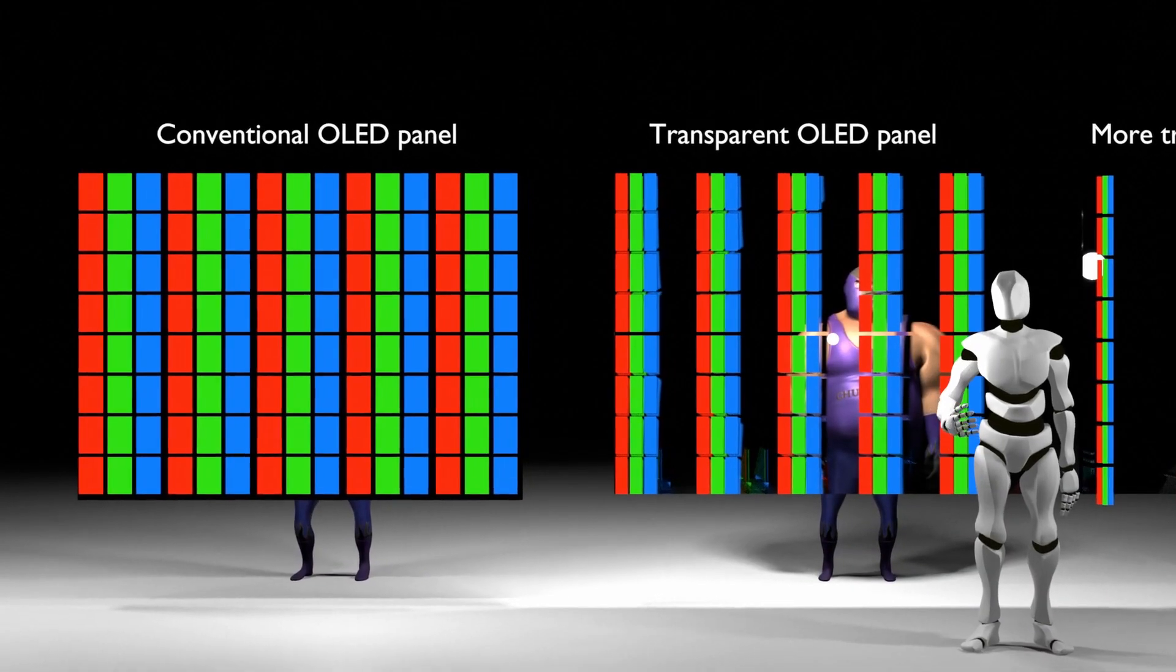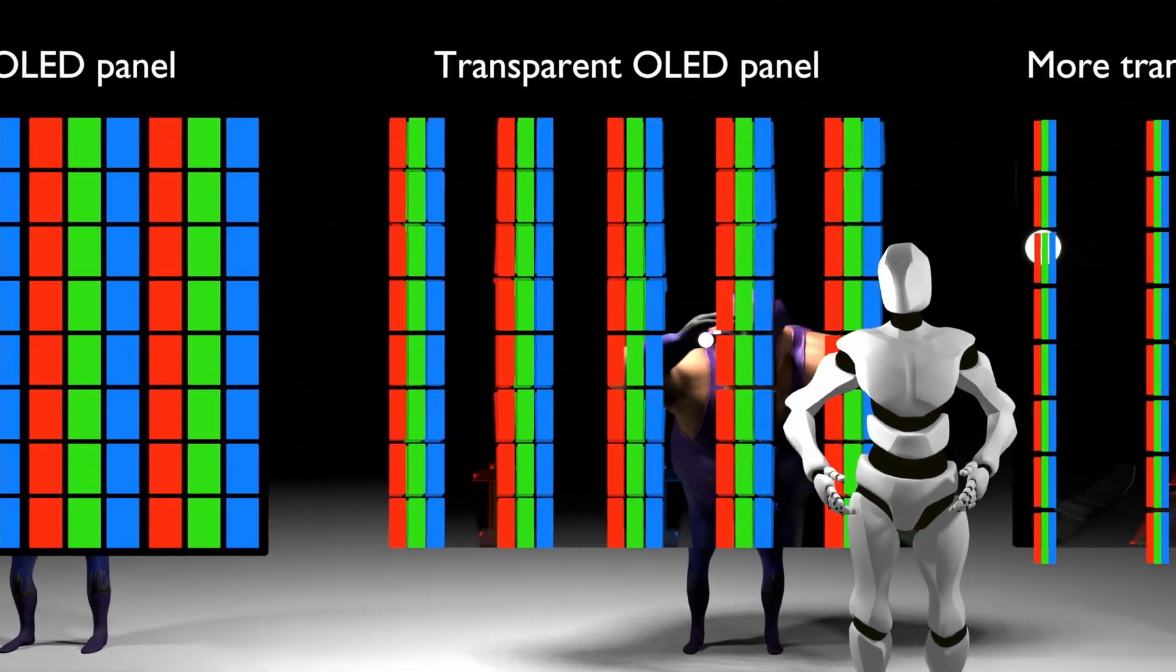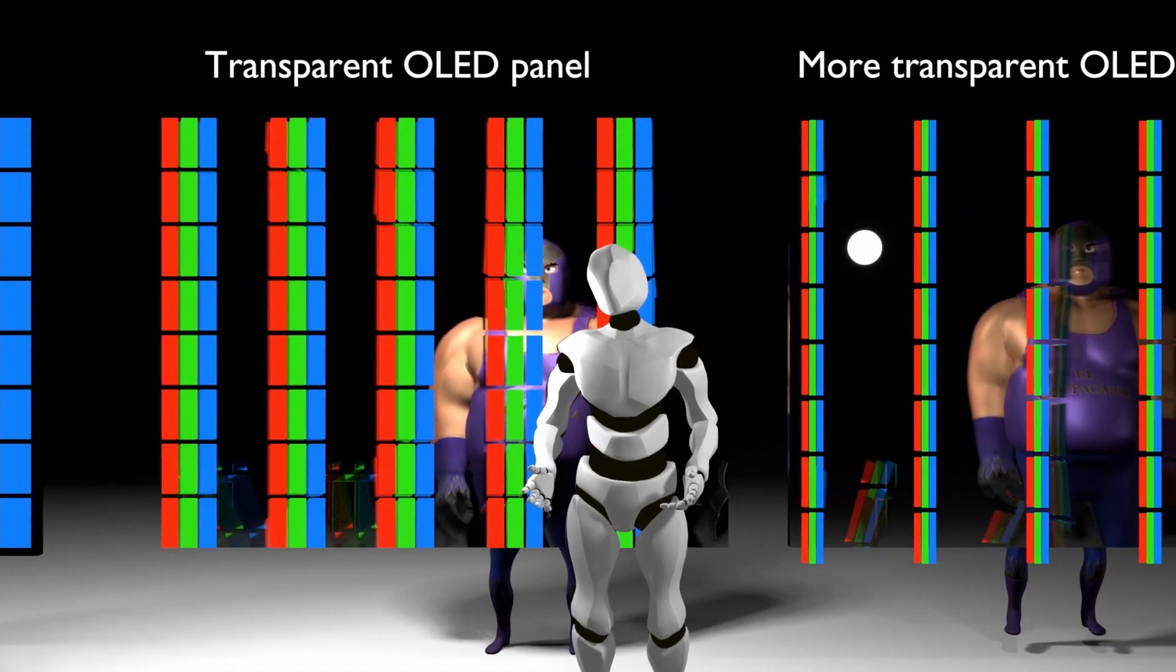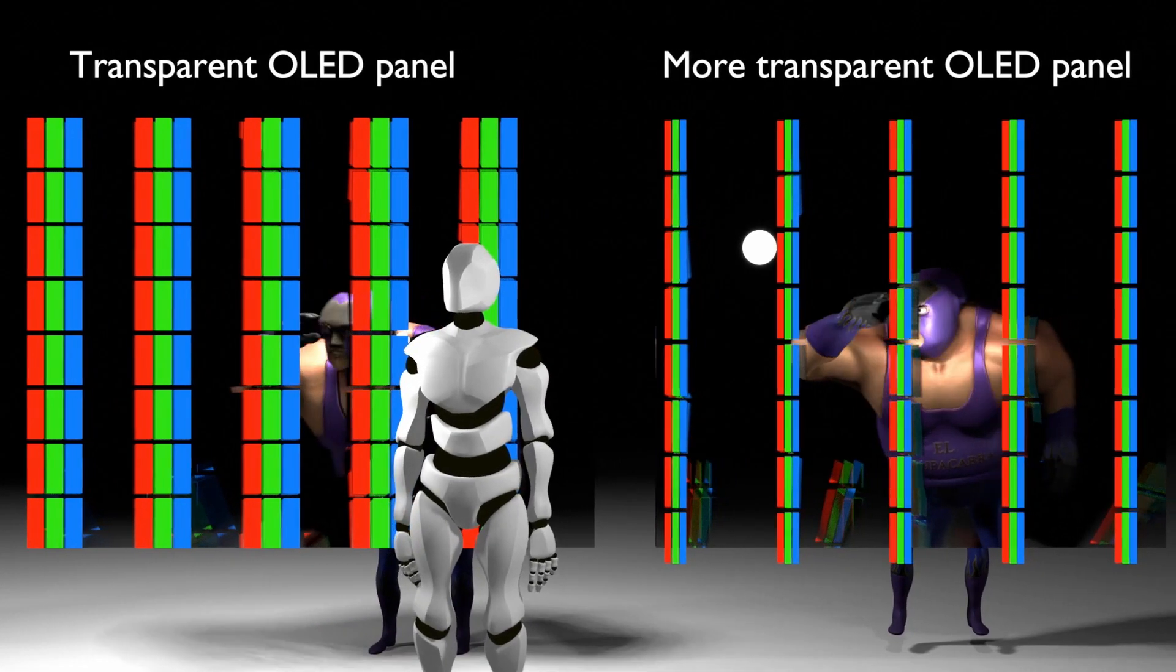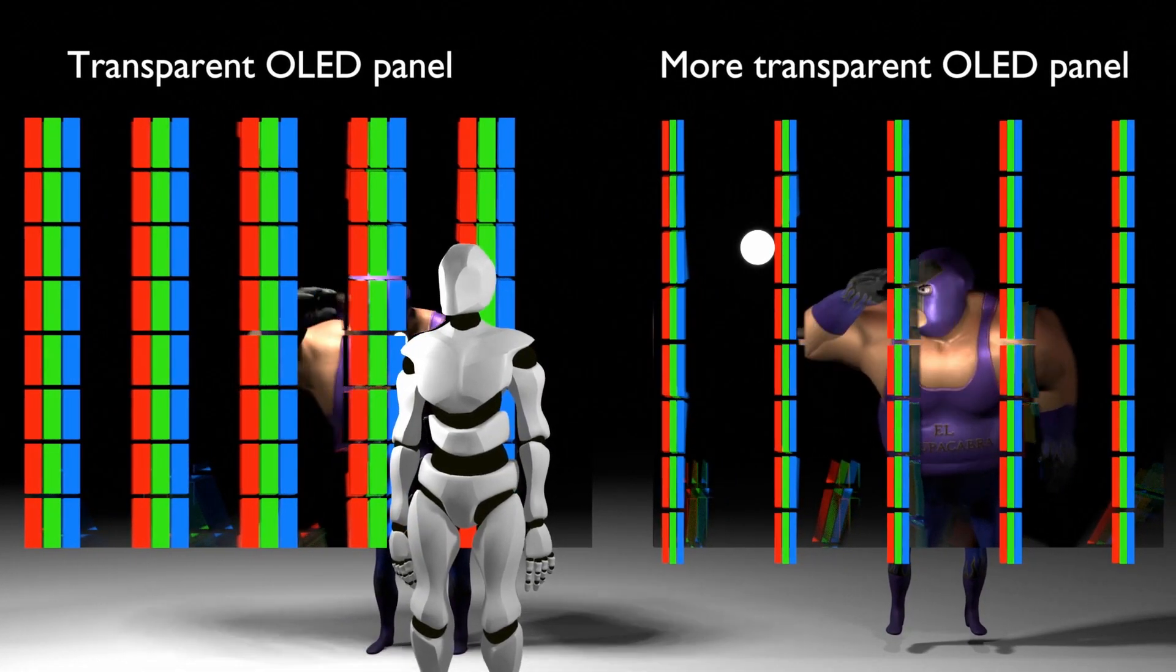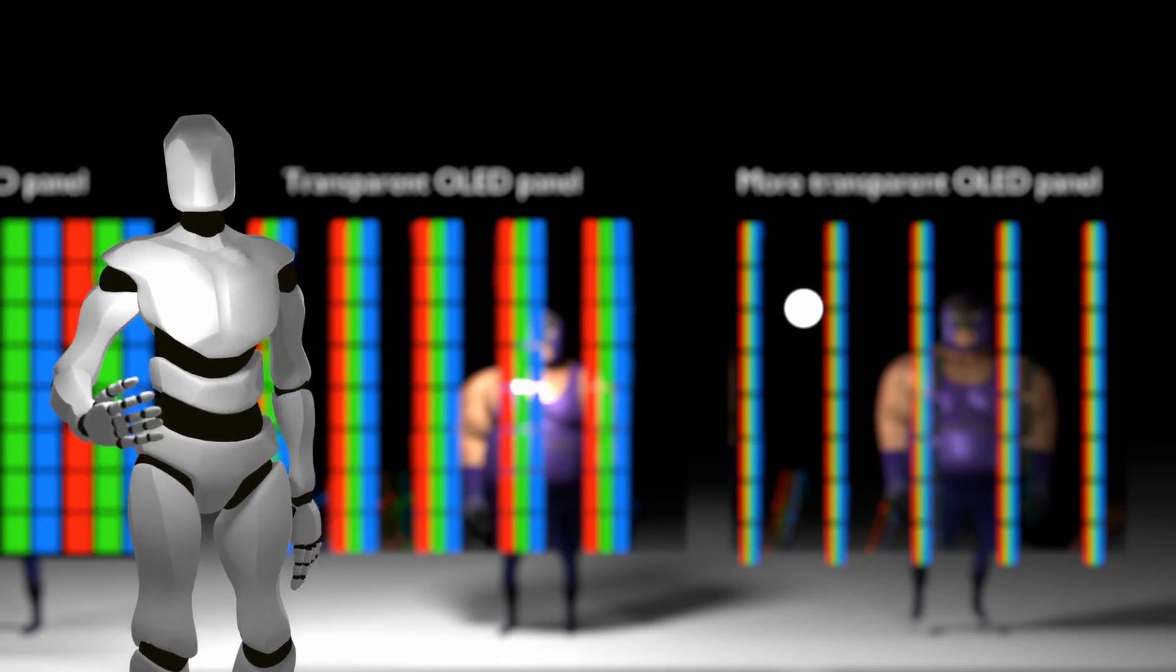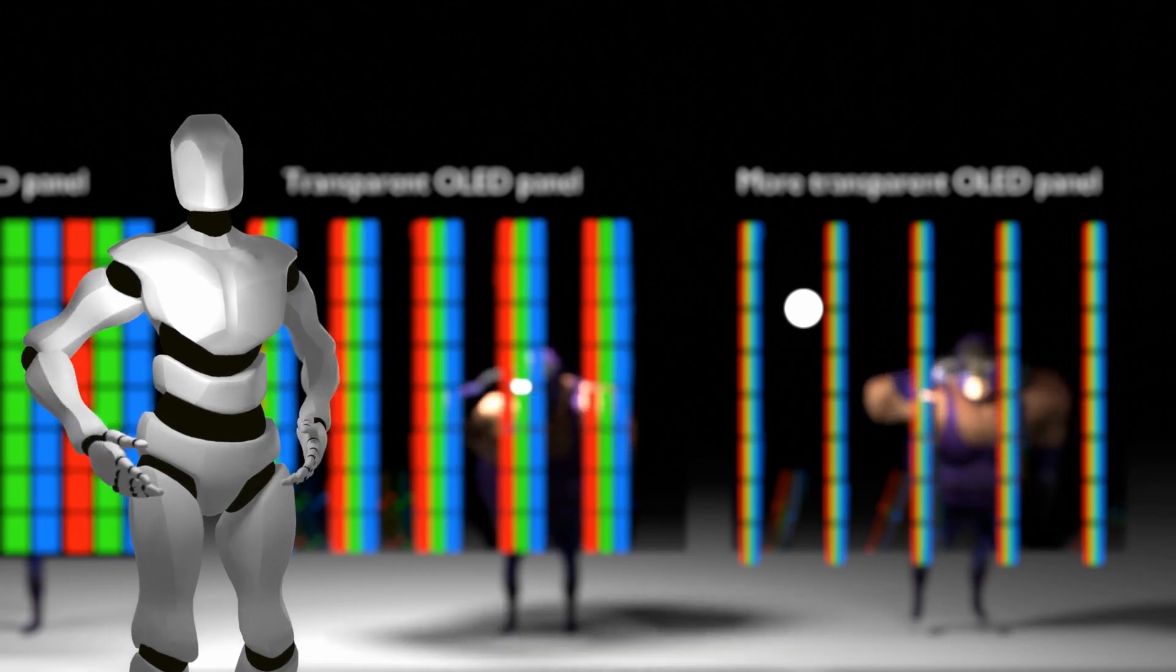If you enlarge the transparent OLED panel using this principle, it will look like what you see in the video. If you increase the area of the transparent part, the transmittance of the panel will increase, but instead, the area of the emitting part decreases by that much, which has an adverse effect on the lifespan. I believe that you have understood the principle sufficiently conceptually, and let's talk about the more specific structure.